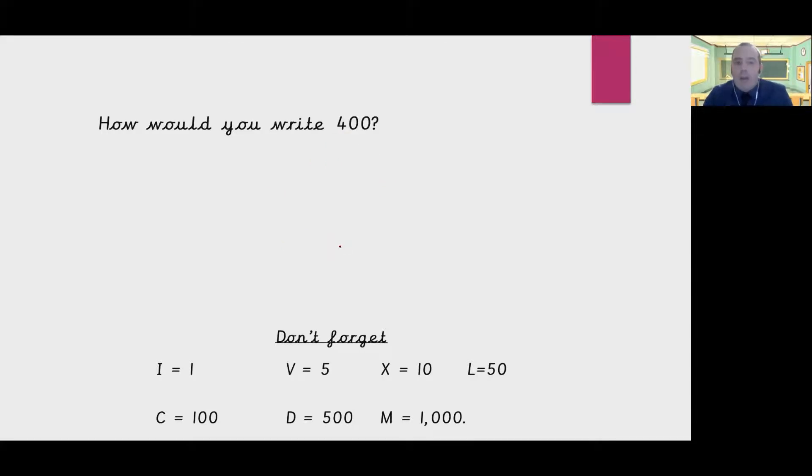Now how would you write 400? Remembering we can't have four of the same letter all together, how could we write 400 using what we've got at the bottom of the screen to help us? Pause here and have a go. Okay, what ideas did you come up with? We could have done CD, which would give us what we need. So we put the smaller number first, C, and then D. So when it's written like this, it means 500 take away 100, which gives us 400.